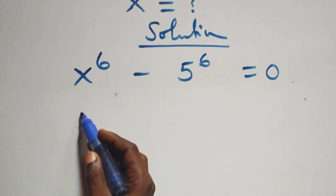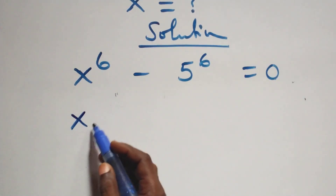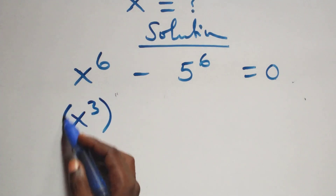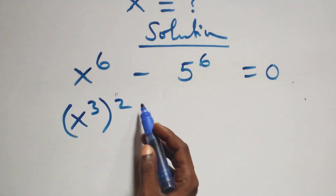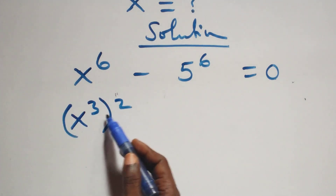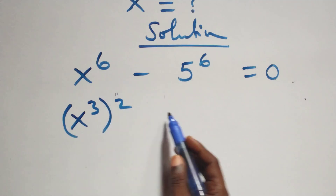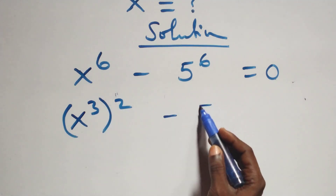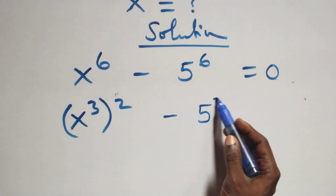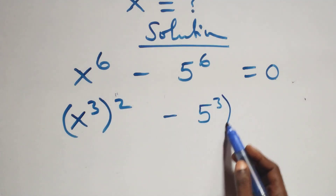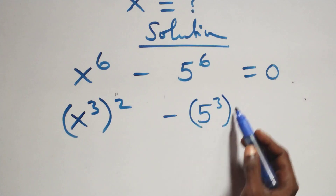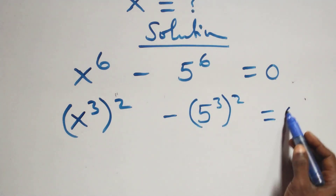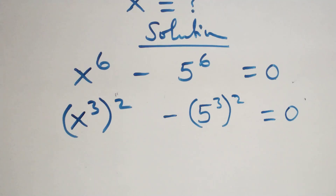The next step, we can write this as x raised to the power 3, all raised to the power 2 — since 2 times 3 equals 6 — minus 5 raised to the power 3, all raised to the power 2, equals to 0.